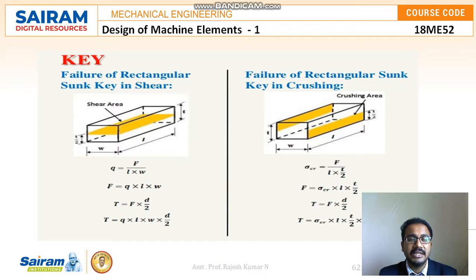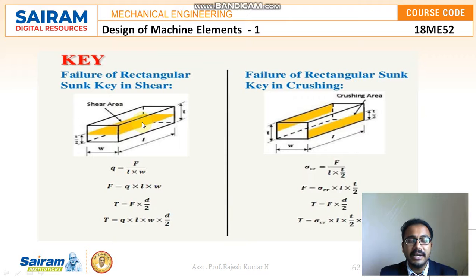First we will see the failure of the rectangular sunk key from the shear point of view. I have taken a rectangular key where w is the width, l is the length, and t is the thickness. The shear area is highlighted in yellow color, indicating that since some part of the key is visible outside there will be partial shear on the key. The shear formula is: τ = F divided by (l × w).